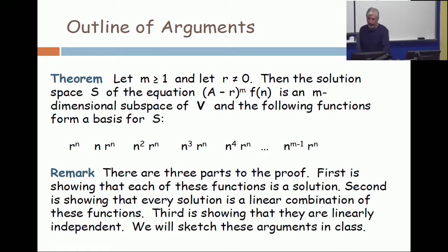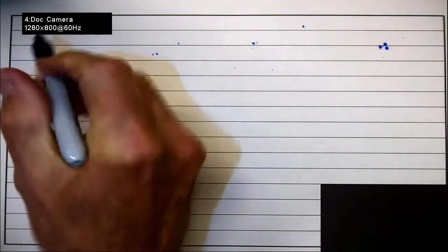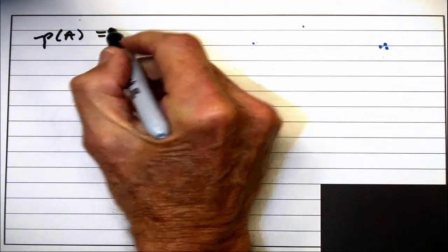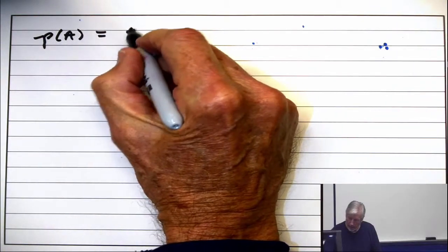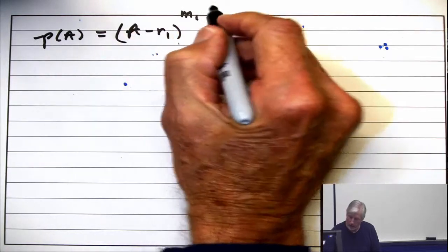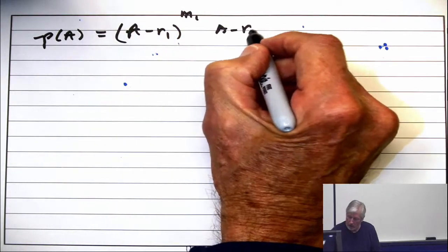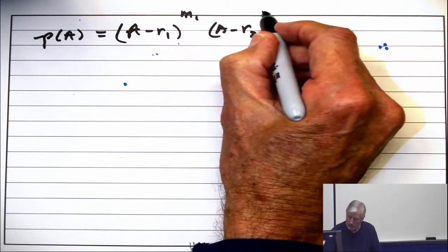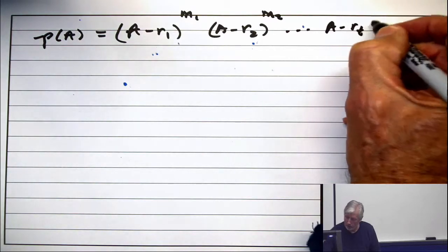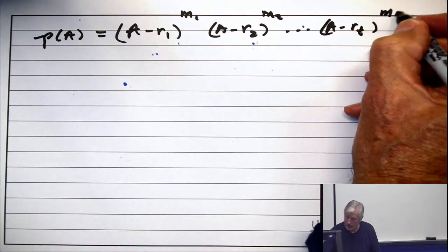How do you handle the case when your polynomial in A has this form? A minus one root to a multiplicity times A minus another root to a multiplicity, et cetera, like this.